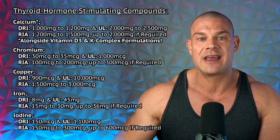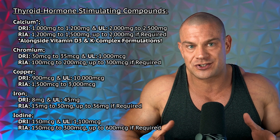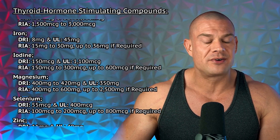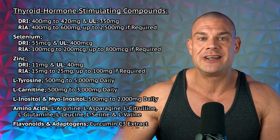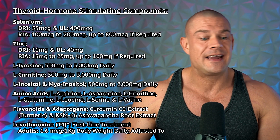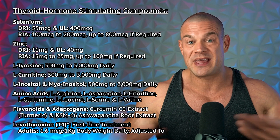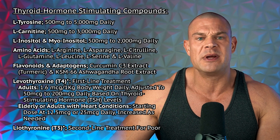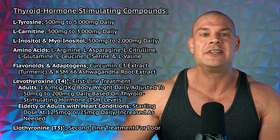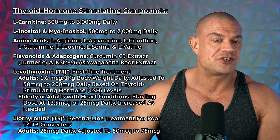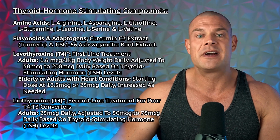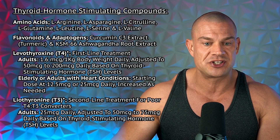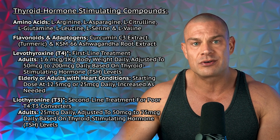Additional minerals that contribute to thyroid function include chromium, copper, iron, iodine — obviously — magnesium, and selenium for those selenium-containing deiodinase enzymes that cleave one iodine atom from T4 into T3, making it biologically active. Zinc also contributes, as does L-tyrosine — it's a tyrosine-based hormone after all. L-carnitine contributes, L-inositol and myo-inositol contribute, and various amino acids like L-arginine, L-asparagine, L-citrulline, L-glutamine, L-leucine, L-serine, and L-valine all contribute to thyroid function.